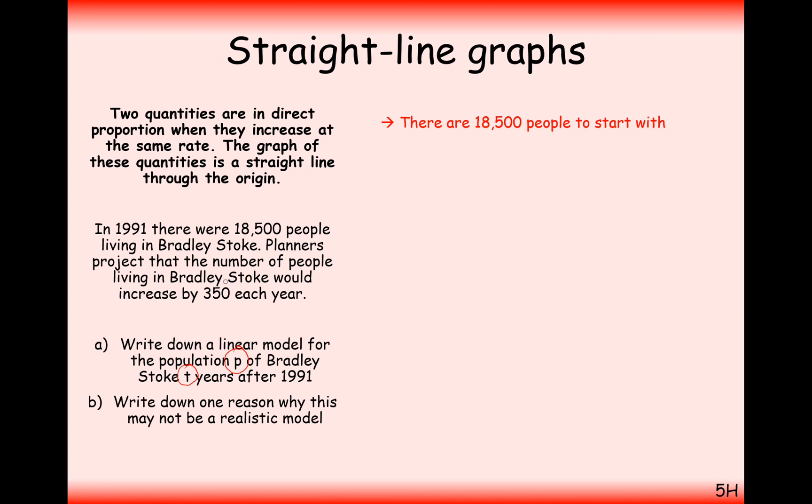If our initial value is 18,500, and we increase our population by 350 each year, then we just times 350 by t. This is effectively the gradient, this is effectively our initial value.